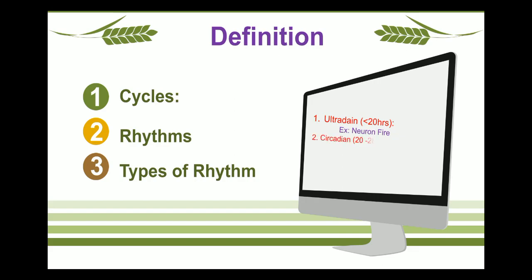Second, Circadian Rhythms — if the cycle is approximately 24 hours, such cycles are known as circadian rhythms. Example: the sleep-wake cycle, which also consists of REM and non-REM phases. REM means Rapid Eye Movement and NREM means Non-Rapid Eye Movement.